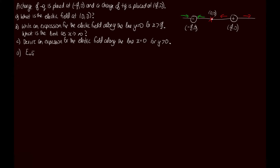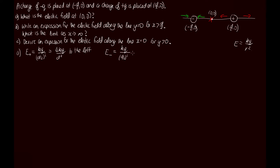Let's call E_positive the field at the origin due to the positive charge. The electric field due to a point charge is kq/r². The distance between the origin and the charge is d/2, so E_positive = kq/(d/2)² = 4kq/d², directed to the left. For E_negative, the magnitude of the charge is still q and the distance is again d/2, so E_negative = 4kq/d², also directed to the left.